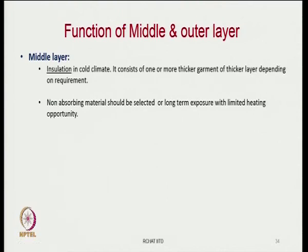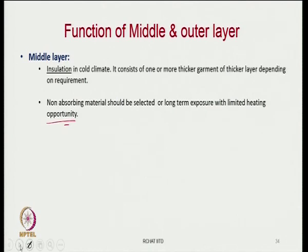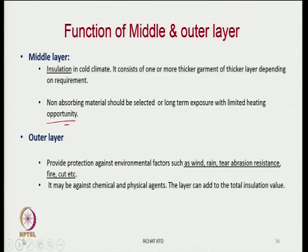The function of the middle layer is basically insulation — for games specific to winter like ice hockey or skiing, we need thick insulation. Non-absorbing material should be selected for the middle layer for long-term exposure with limited heating, so that moisture is not held within the fibers. The outer layer is to protect from wind and rain, and should give tear resistance and abrasion resistance, and protect from fire, cut, and chemical or physical agents.